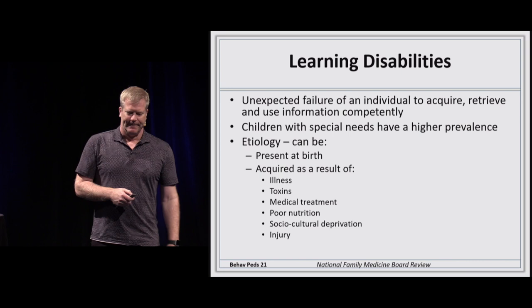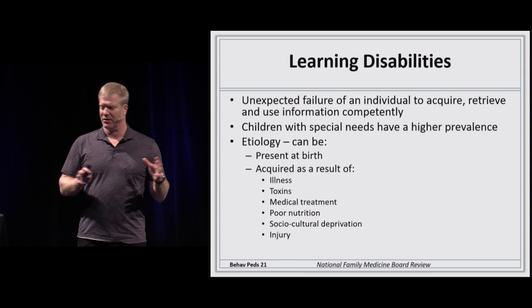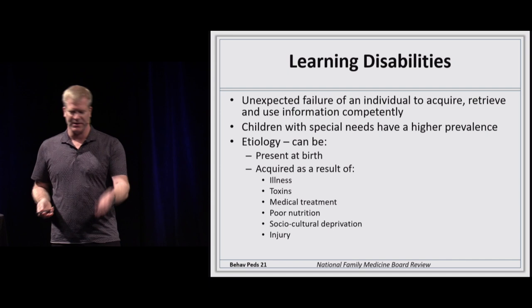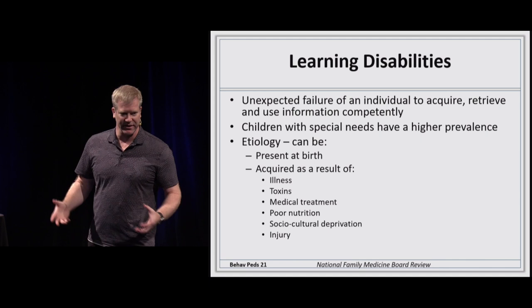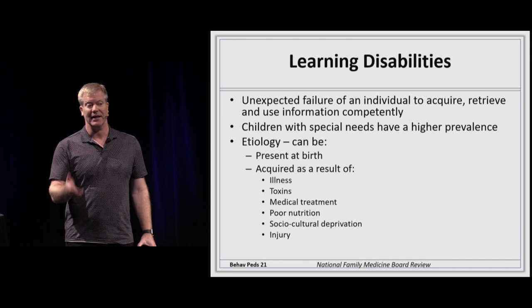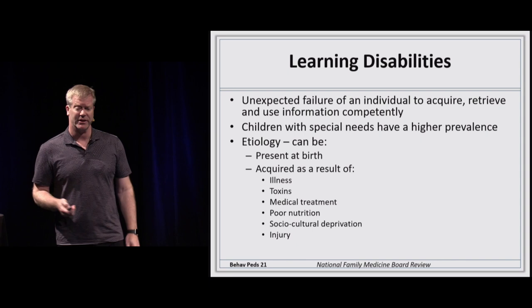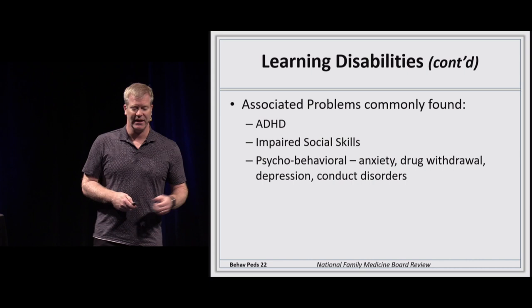Learning disabilities can be congenital or acquired. Causes include illness, missing school, behavioral issues, lead exposure, poor nutrition, and socioeconomic and social determinants of health. There are associations with ADHD and impaired social skills. The differential diagnosis requires navigating through history with the parent, the teacher, and direct observation — determining whether the issue has always been present or is something new.